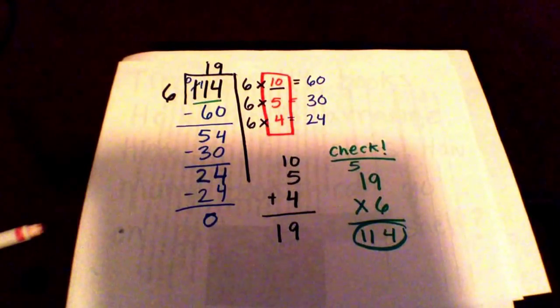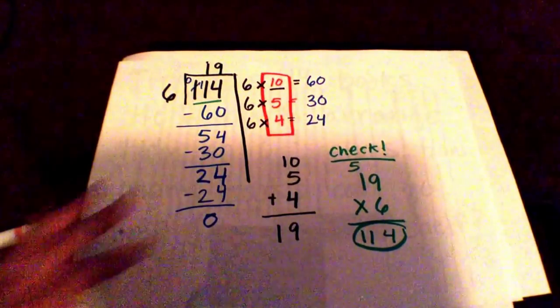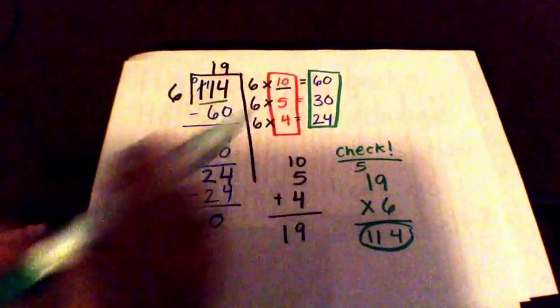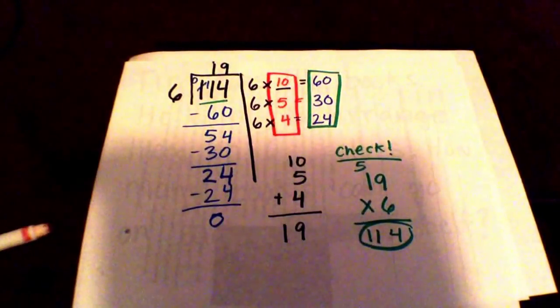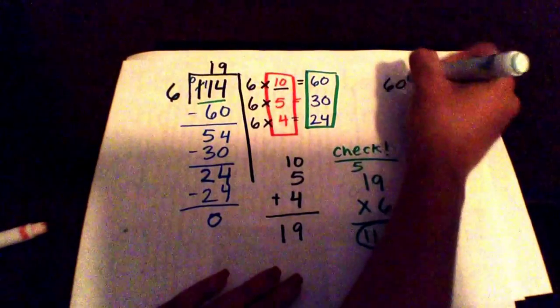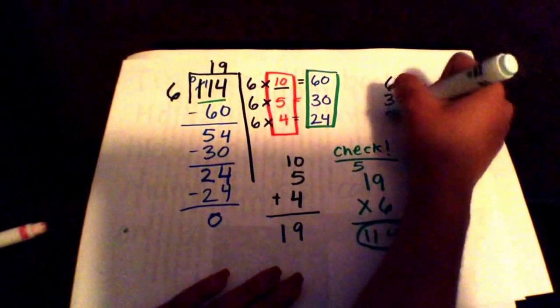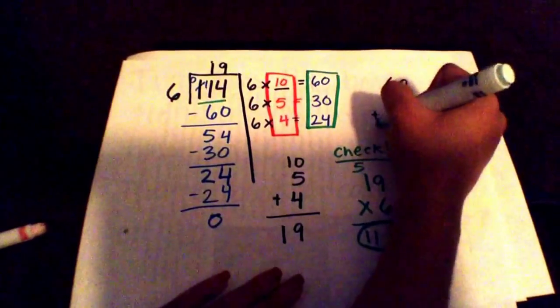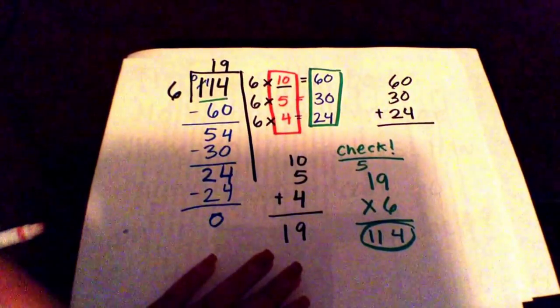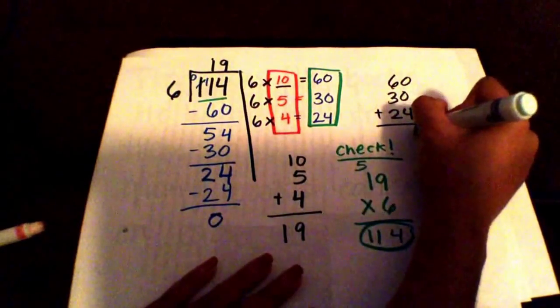Another way you can check is by adding these products over here, and they must also match 114. So I'm going to do 60 plus 30 plus 24. Zero plus zero plus 4 is 4.